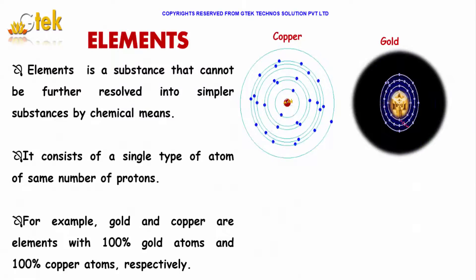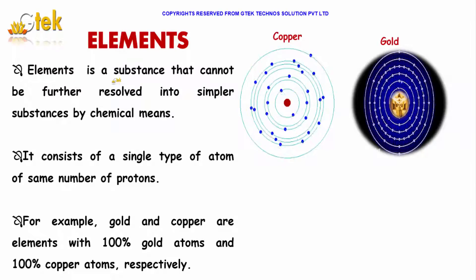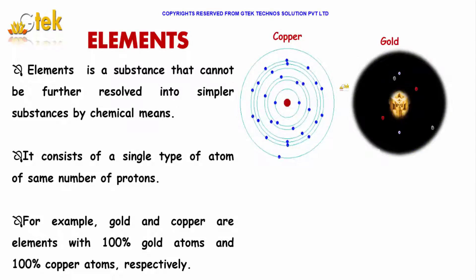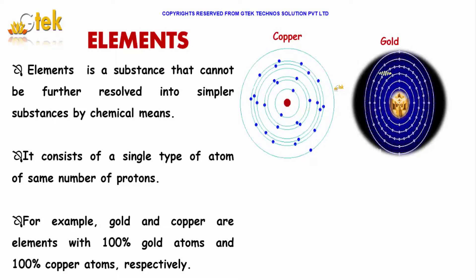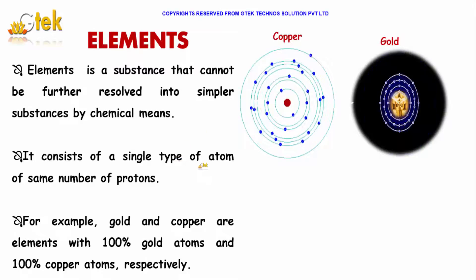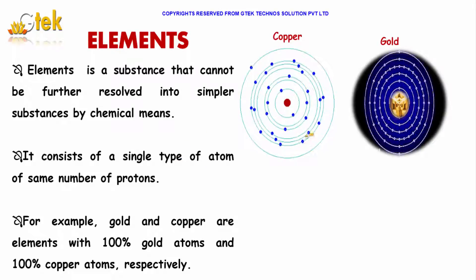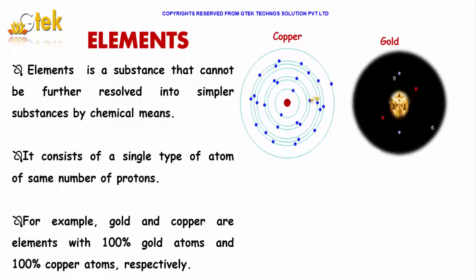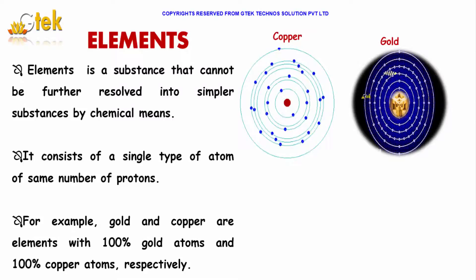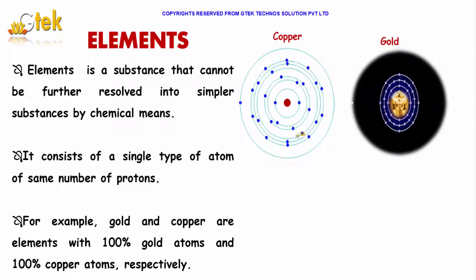If we talk about the elements, an element is a substance that cannot be further resolved into a simpler substance by chemical means. It consists of a single type of atom of the same number of protons. For example, gold and copper are elements with 100% gold atoms and 100% copper atoms respectively.